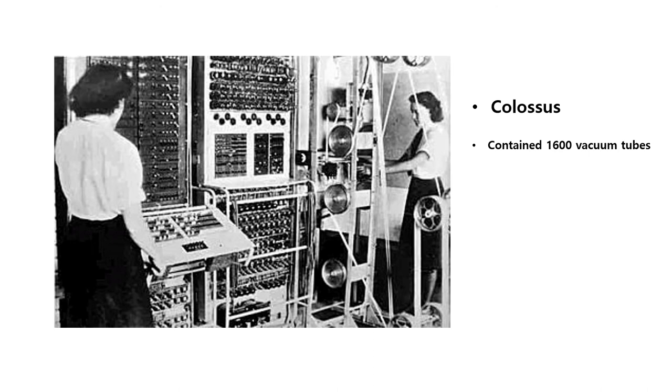Here is another computer, Colossus, which contained 1,600 vacuum tubes. Colossus was the name of a series of computers developed by British code-breakers in 1943 to 1945 to help in the cryptanalysis of the Lorenz cipher. Colossus used thermionic valves, that is vacuum tubes, and thyratrons to perform Boolean and counting operations. Colossus is thus regarded as the world's first programmable electronic digital computer, although it was programmed by plugs, switches, and not by a stored program. Colossus was designed by the engineer Tommy Flowers to solve a problem posed by mathematician Max Newman at the Government Code and Cypher School at Bletchley Park. Alan Turing's use of probability in cryptanalysis contributed to its design.